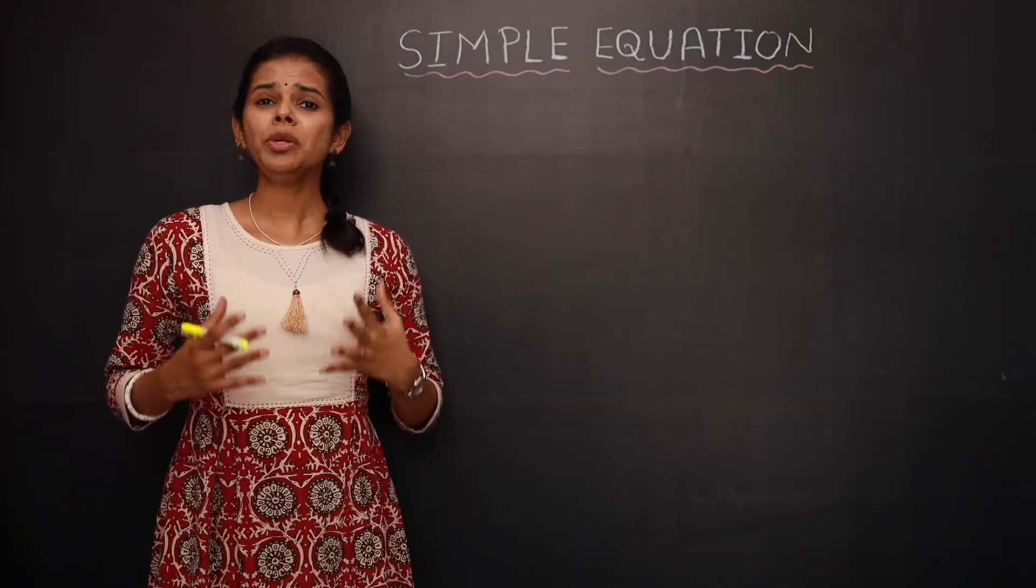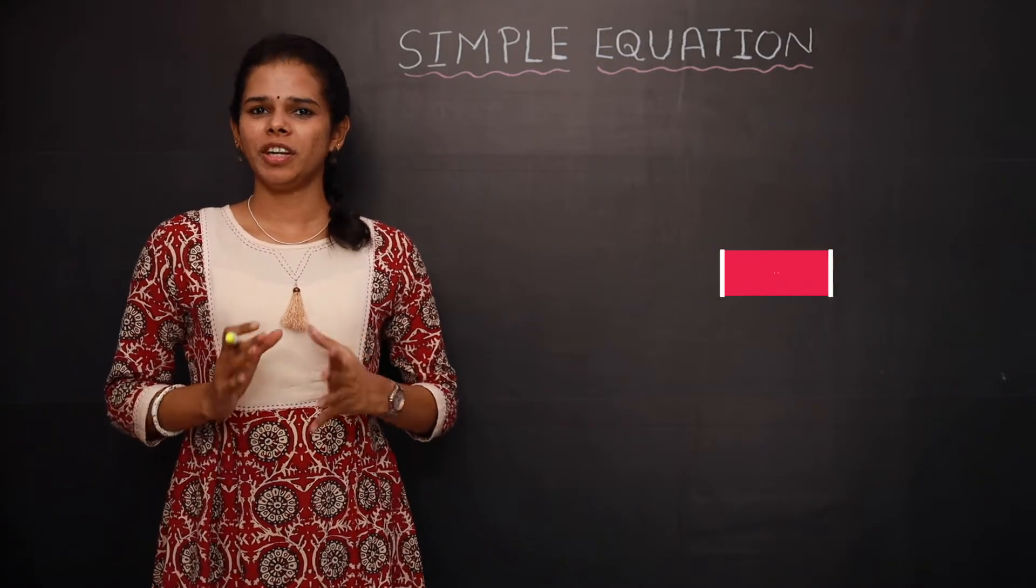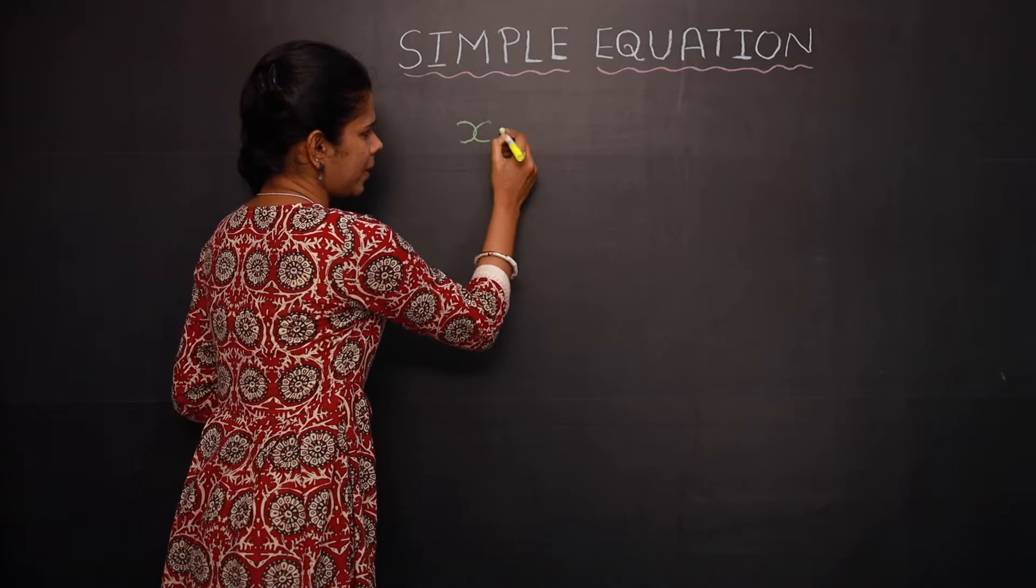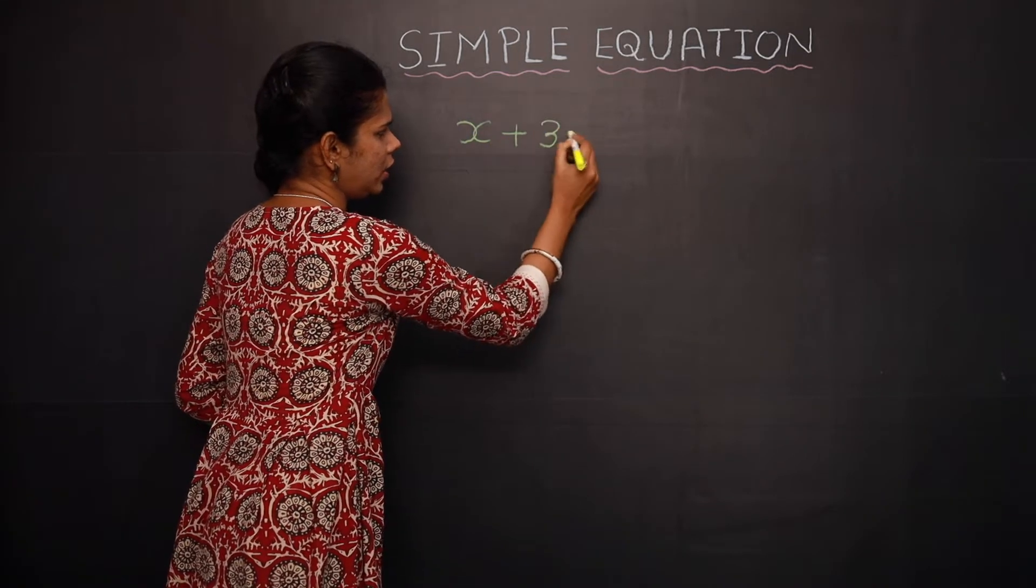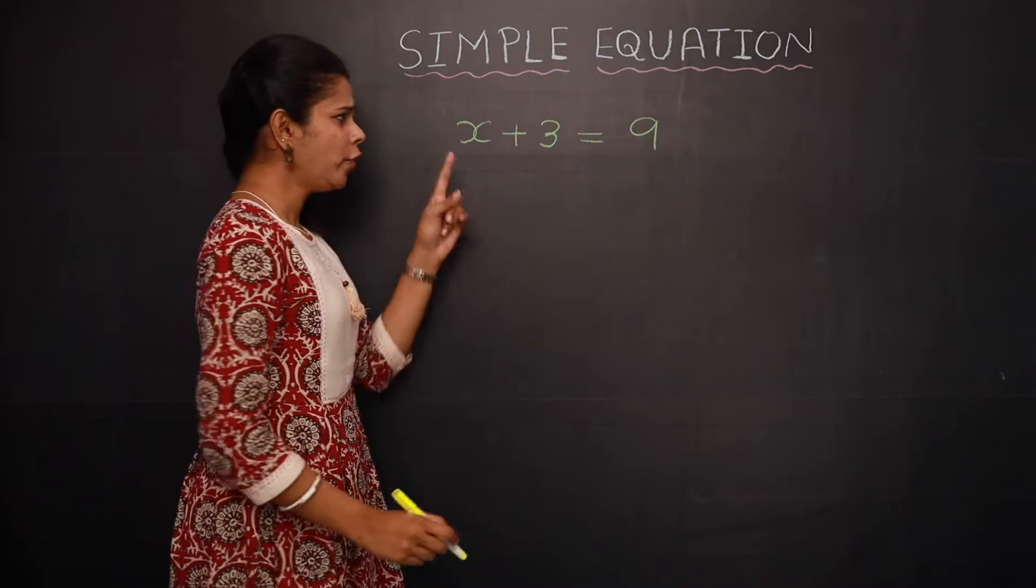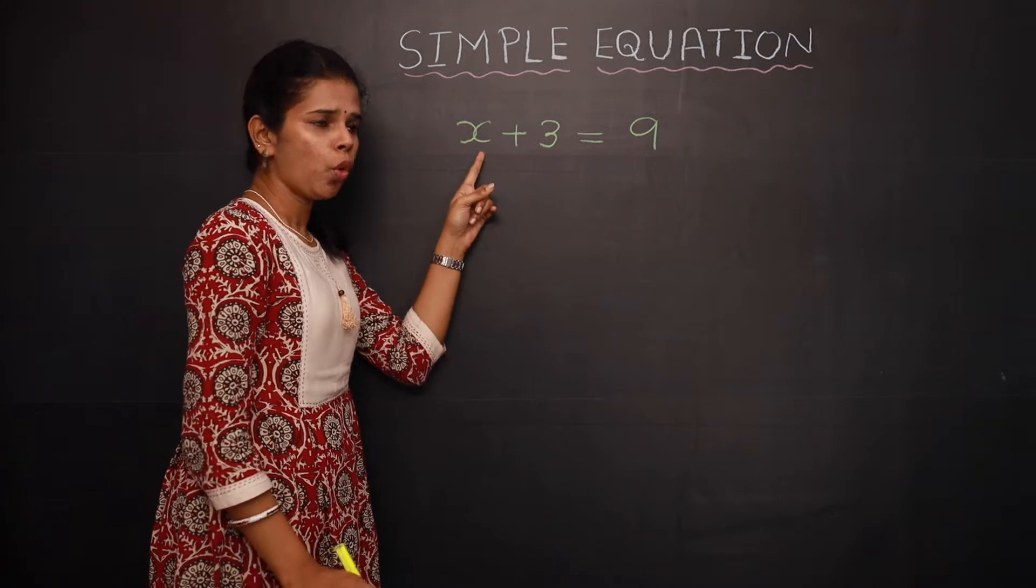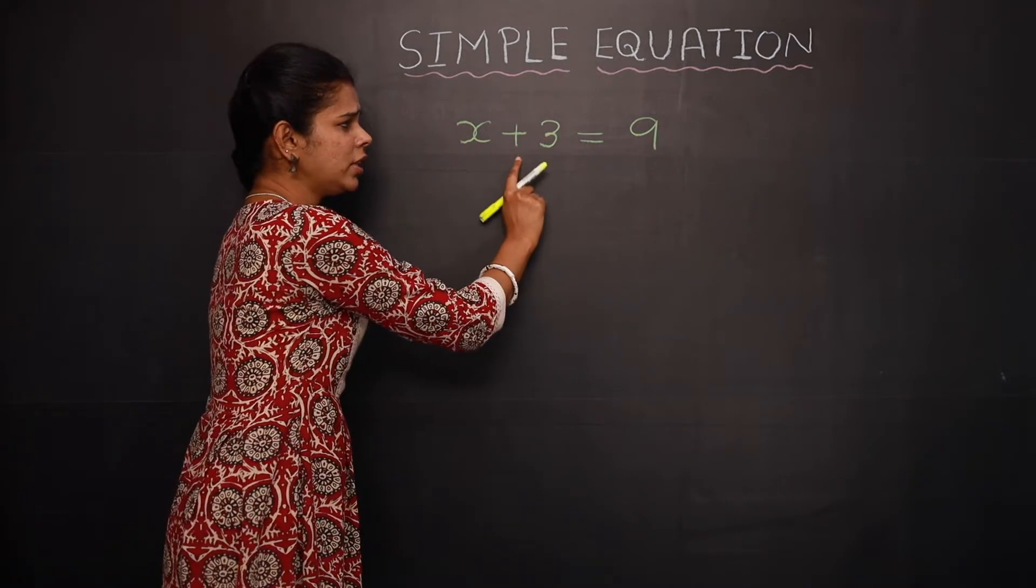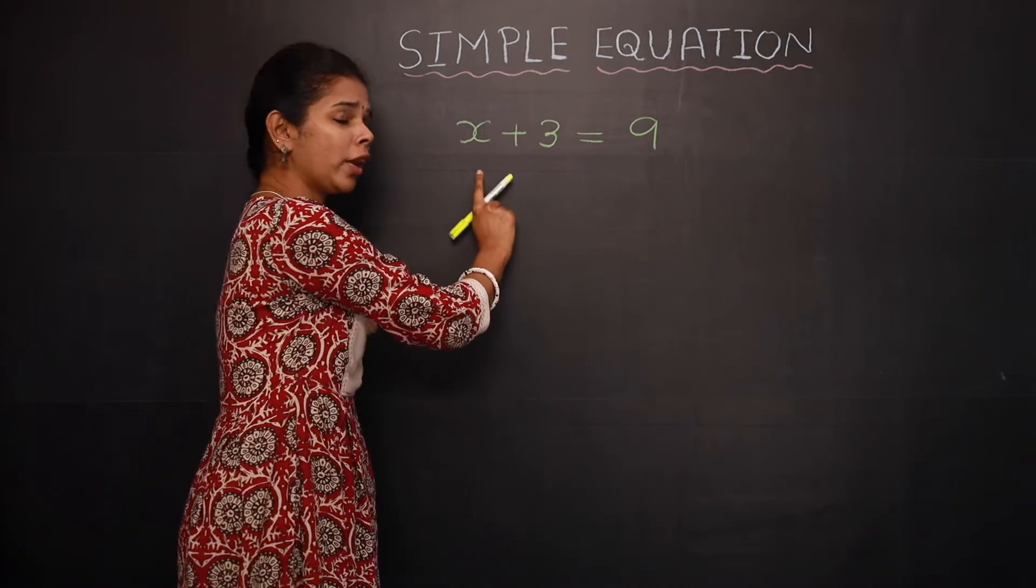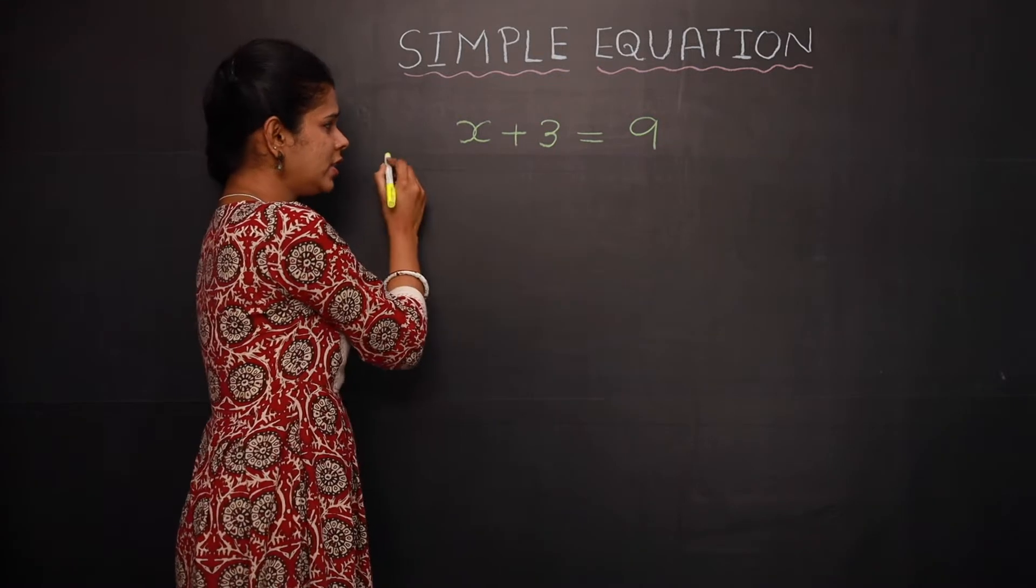How can you check whether the given value of a variable is the solution of a given equation? Let's see an equation: x plus 3 equal to 9. So when the value of x is given as 0, will 0 plus 3 be equal to 9? No, so 0 cannot be the solution of this equation.